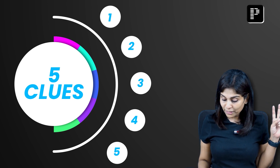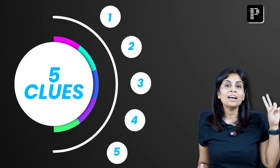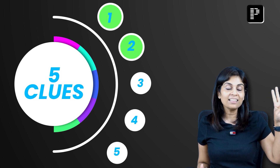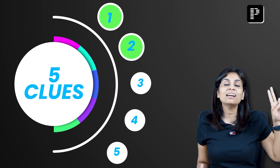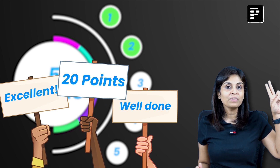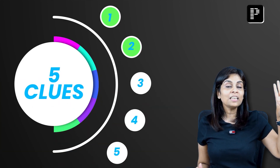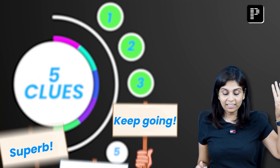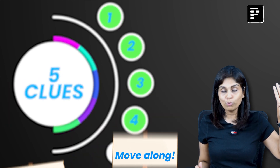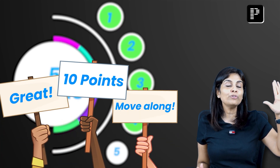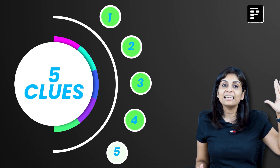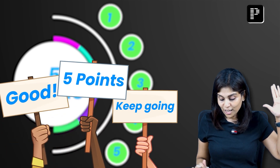All you're expected to do is give out the right answer after clue number two is displayed. At that point, if your answer is right, you get 20 points. If you need three clues, you get 15 points; four clues, 10 points; and even if you use all five clues to give the right answer, you get five points.